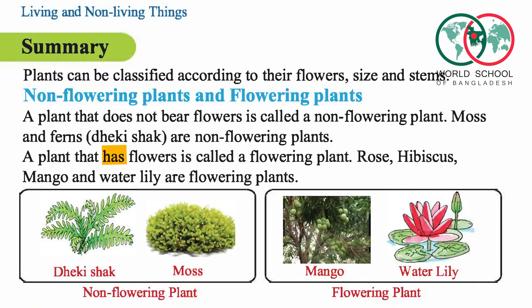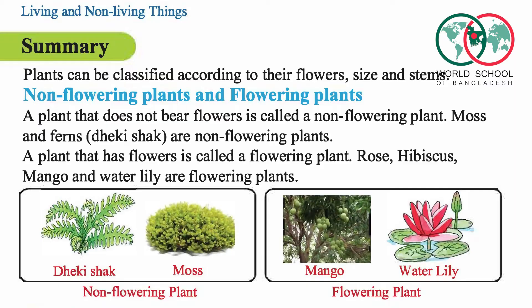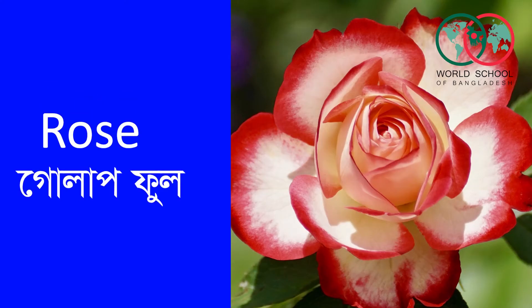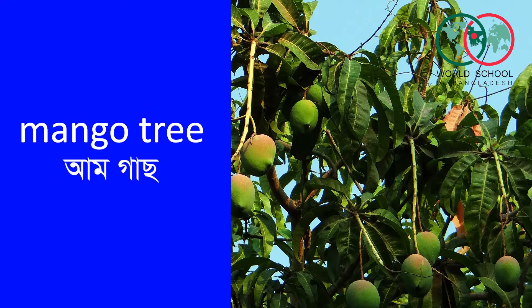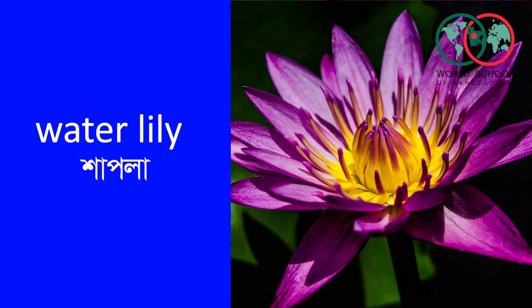A plant that has flowers is called a flowering plant. Rose, hibiscus, mango and water lily are flowering plants.